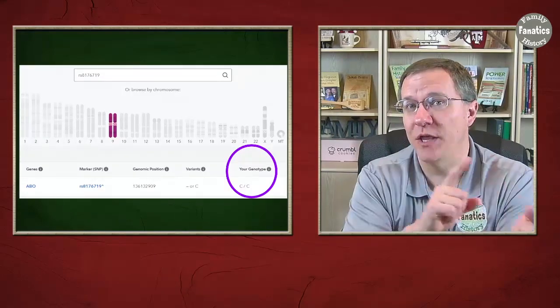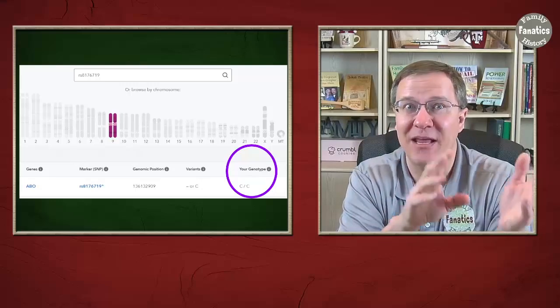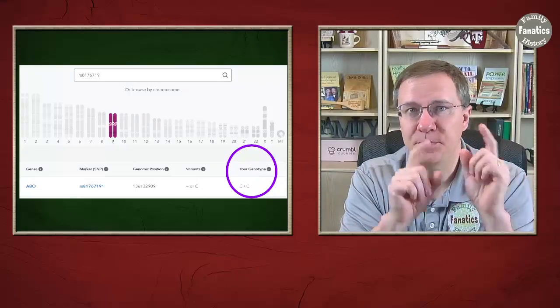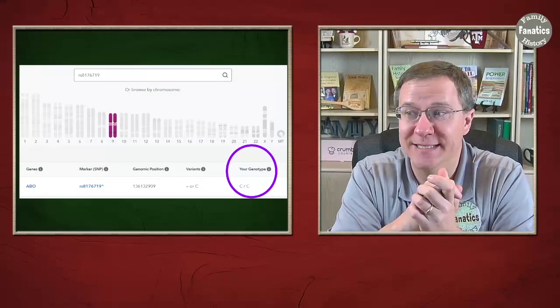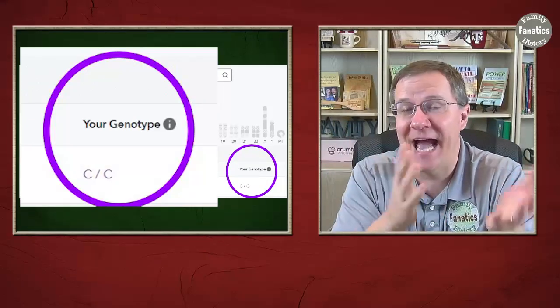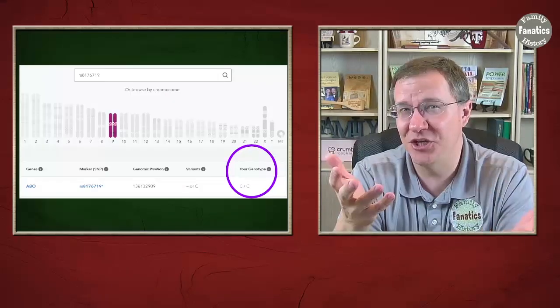If I go to 23andMe in their browse raw data and look up any of these SNPs that they tested, I can see the genotype here. I've circled it. The genotype is CC. That is the actual letters on the DNA at that specific location. That's the genotype.